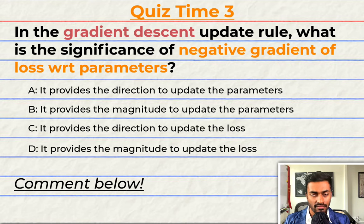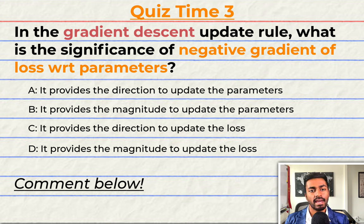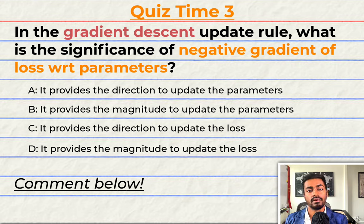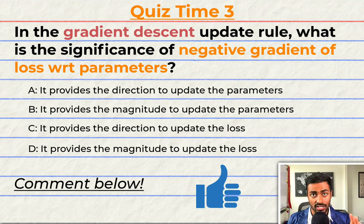This is going to be an interesting one. Have you been paying attention? Let's quiz you to find out. In the gradient descent update rule, what is the significance of the negative gradient of loss with respect to the parameters? A: It provides the direction to update the parameters. B: It provides the magnitude to update the parameters. C: It provides the direction to update the loss. D: It provides the magnitude to update the loss. Comment your answer down below. And if you think I deserve it, please consider giving this video a like — that will help me out a lot. That'll do for quiz time and pass three.